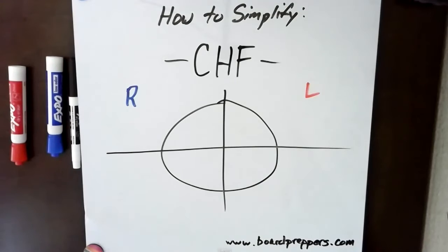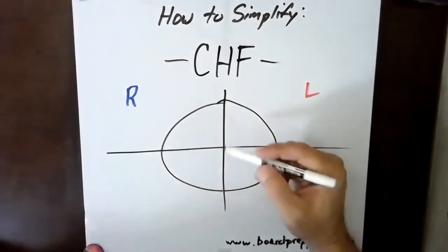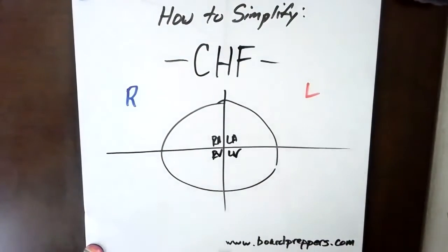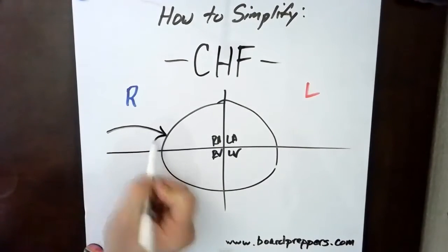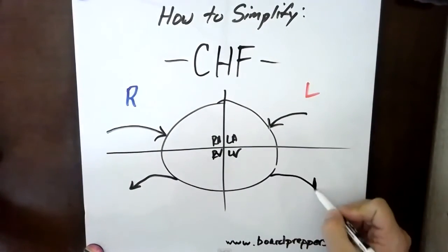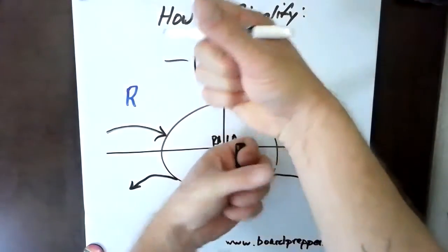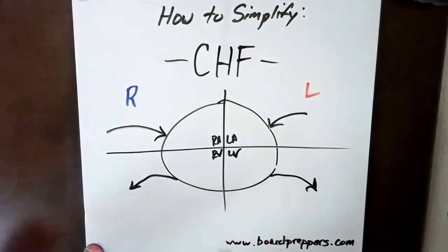What I've got drawn is my heart — it's simple, but I want to identify what's happening. I've got the right atrium, left atrium, right ventricle, and left ventricle. Blood comes in and goes out on both sides. The heart is really just a pump with two sides. When it contracts, you get a squeezing effect — almost like a wringing of the heart muscle.